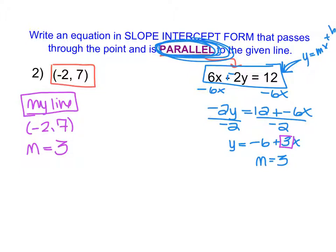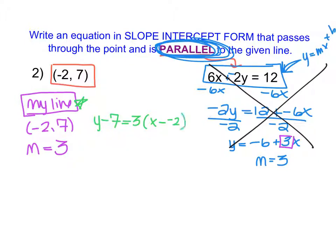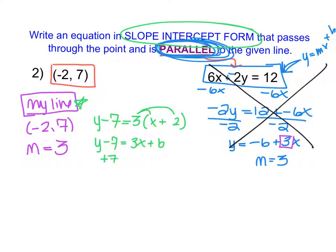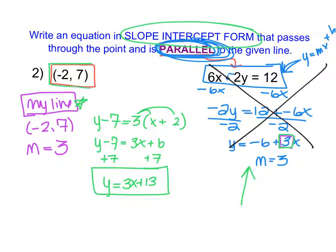Now that I have the slope of my line and a point, I can ignore the given line and focus on writing the equation. Starting in point-slope form: y minus my y-coordinate of 7 equals my slope of 3 times the quantity x minus my x-coordinate of negative 2. Using keep-change-change, I rewrite that as x plus 2. Distributing gives y minus 7 equals 3x plus 6. Adding 7 to each side, I find y equals 3x plus 13. This is the equation of a line parallel to the given blue line with slope 3, passing through the point negative 2, 7.